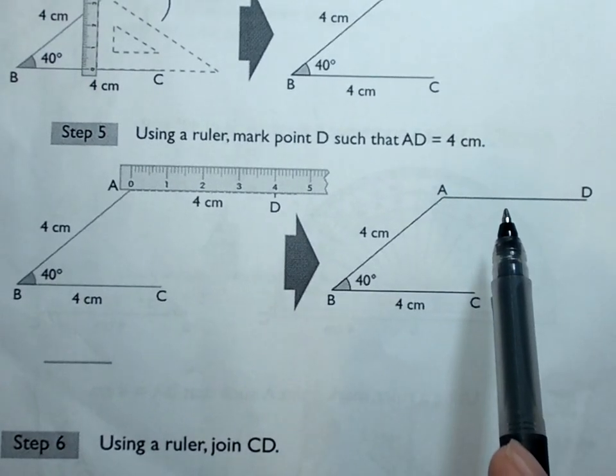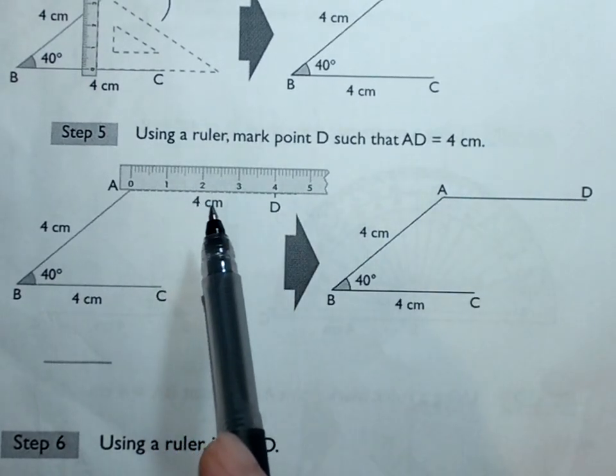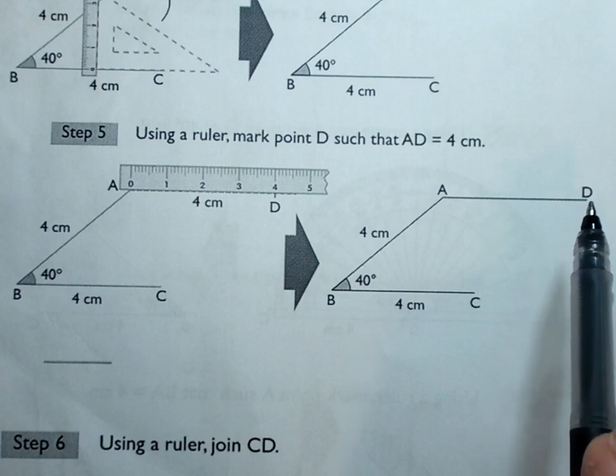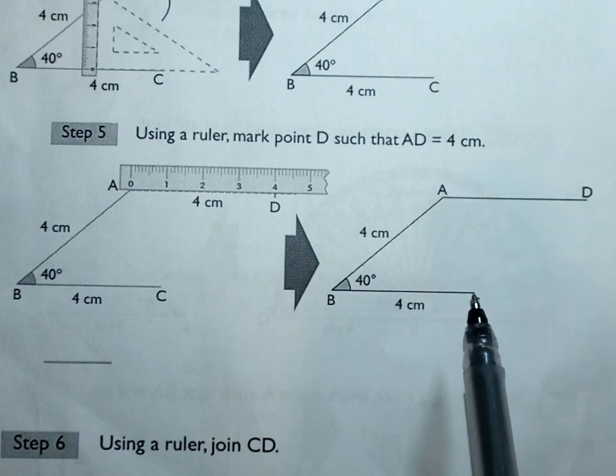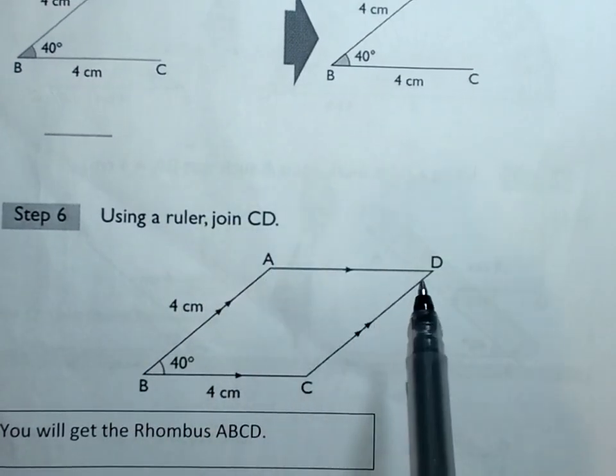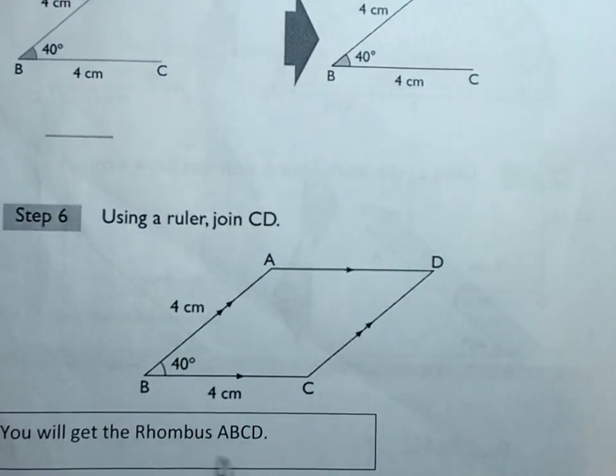After you've drawn this line, measure 4 cm over here for AD. Then later on, finally, these two lines just join together. They should also be 4 cm. Join CD, and you have this final one. Let me demonstrate.